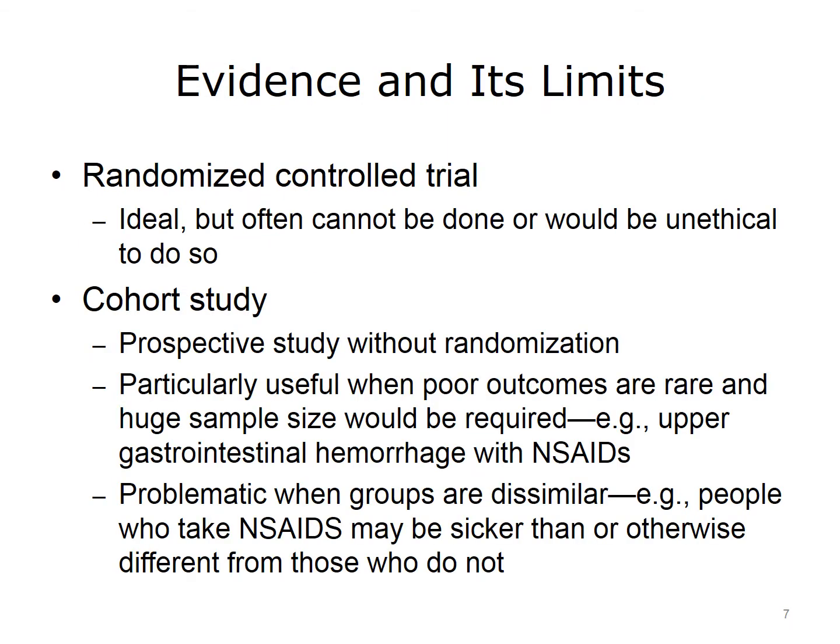Although a randomized controlled trial would provide the best evidence for harm, it often can't be done, or it would be unethical to do so. Therefore, we have to use lesser forms of evidence. Another type of study is a cohort study. This is a prospective study where we take a group of patients who get exposed to something, and we follow them forward in time, but don't randomize them.